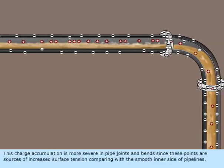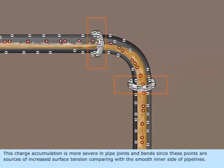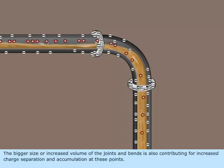This charge accumulation is more severe in pipe joints and bends since these points are sources of increased surface tension comparing with the smooth inner side of pipelines. The bigger size or increased volume of the joints and bends is also contributing for increased charge separation and accumulation at these points.